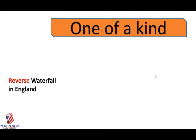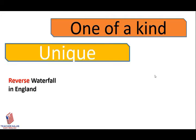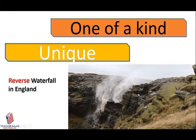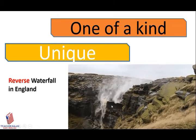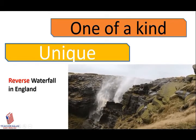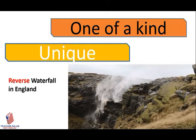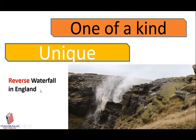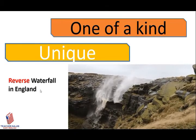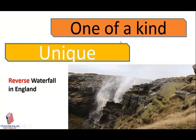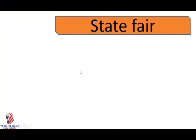The next vocabulary is 'one of a kind,' which means unique. Here we have a picture of a reverse waterfall. It is a reverse waterfall and it is unique — it's one of a kind. We don't have it in Morocco, it doesn't exist in France or America. It's only in England, so it is one of a kind.